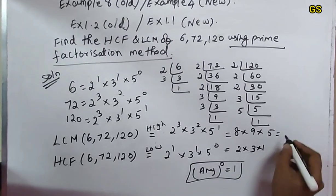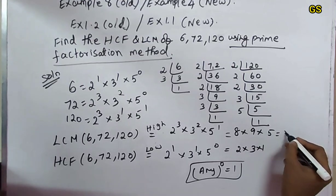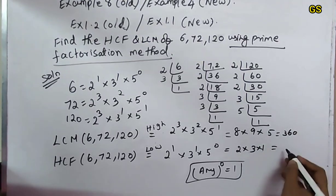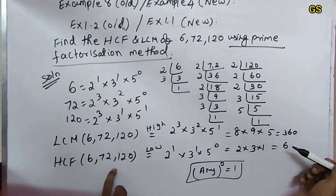8 times 9 is 72, 72 times 5 is 360. For HCF: 2 times 3 is 6. So this is the LCM - LCM of 3 numbers is 360. HCF of 3 numbers is 6.